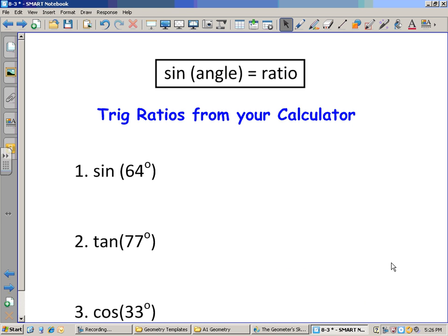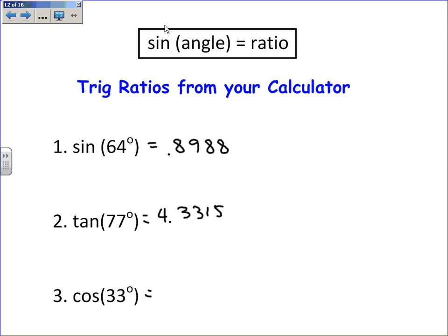For the sine of 64, type in sine 64 and you get the sine ratio for a triangle with a 64-degree angle. I usually use at least four decimal places for trig ratios. The tangent of 77 gives 4.3315, and the cosine of 33 degrees is 0.8387. On a graphing calculator, type the function button first then the angle; on a scientific calculator, type the angle first then press the function button.